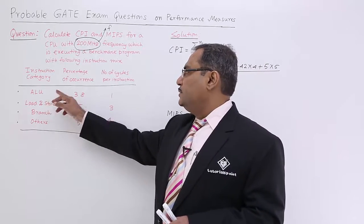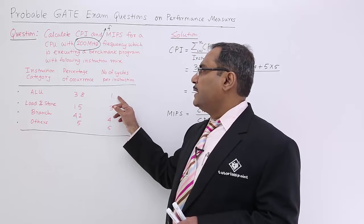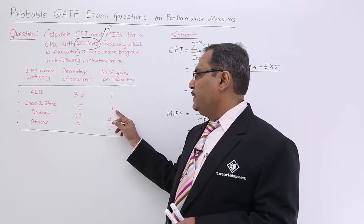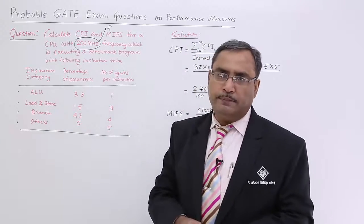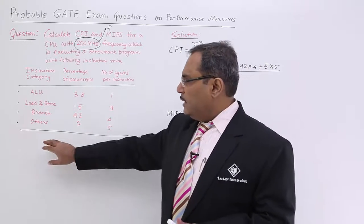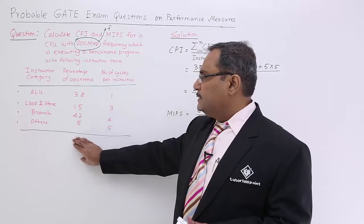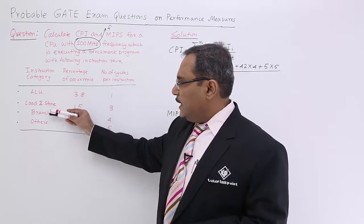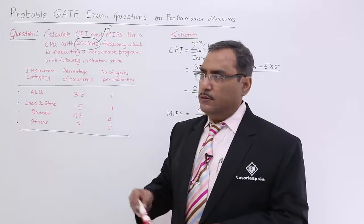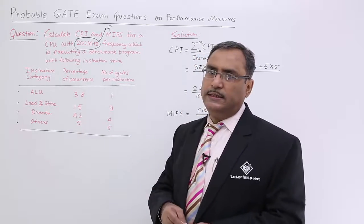The ALU instruction is having one cycle per instruction. CPIs for the respective categories have been written in the third column. Here we are considering that this particular program is having a mix of 100 instructions with these categories and respective percentages.